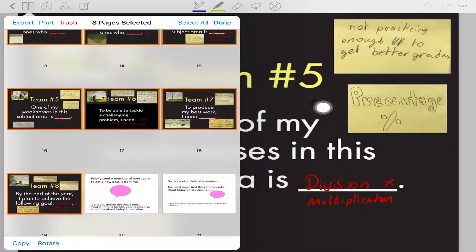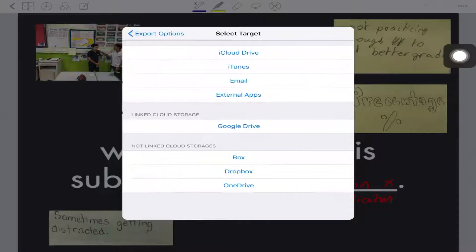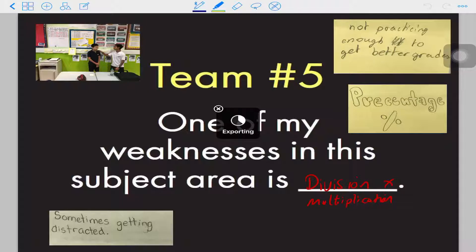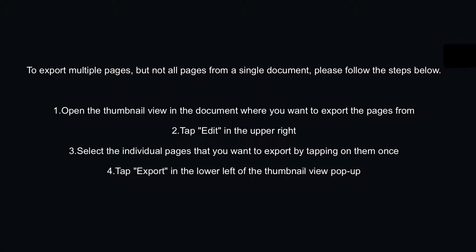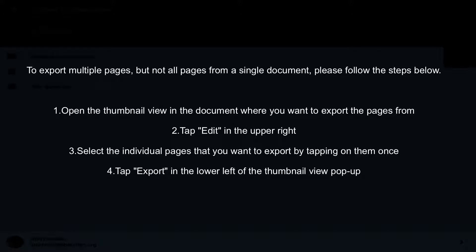What I need to do now is select export. I'm okay with that file name because this is just an example. I can continue by pressing export, and then I usually do it as an external app and upload it to Google Classroom. So from here you can continue to upload it where you like. That's how we export a selection of pages as opposed to doing just a single page or the whole notebook.